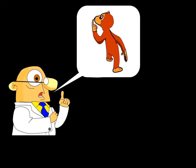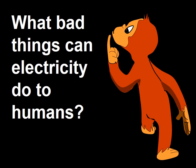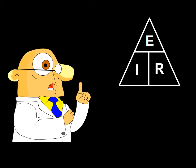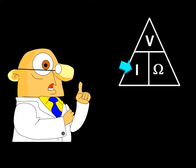Now that we have talked about most of the factors influencing the severity of an electric shock, I am going to bring a friend of mine to ask a question: what bad things can electricity do to humans? I will start to answer this question by showing you the triangle I use to work out problems regarding Ohm's law. E stands for electrical force, measured in volts. R stands for resistance, measured in ohms. And I stands for current, with the unit of current being the amp.